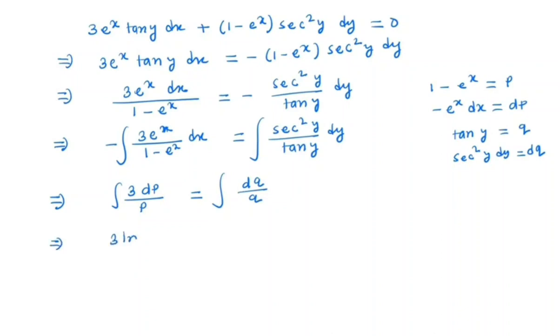So here we have 3 ln p is equal to ln q, and since we have ln, we write the constant as ln c. So here we have p^3 is equal to cq.